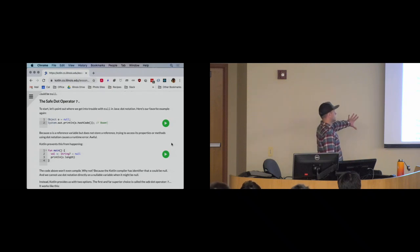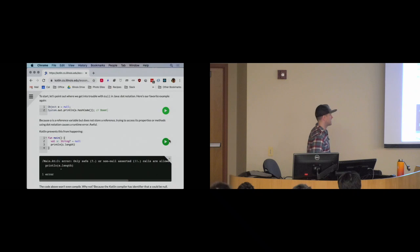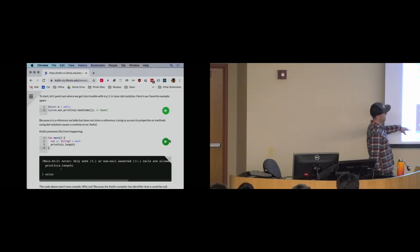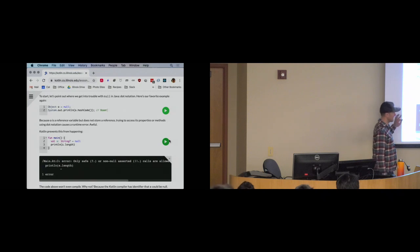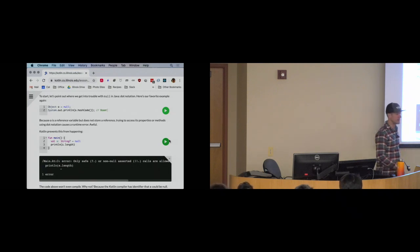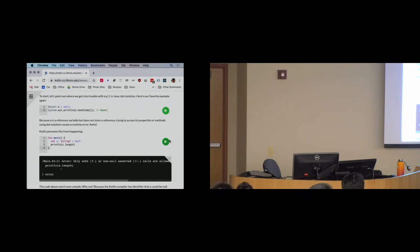Kotlin won't even compile code that unsafely dereferences a nullable variable. This is a compile-time error, not a runtime error — it happens during development and is something you are forced to fix before you release your code. You cannot build a Kotlin program if you do not handle this case properly.